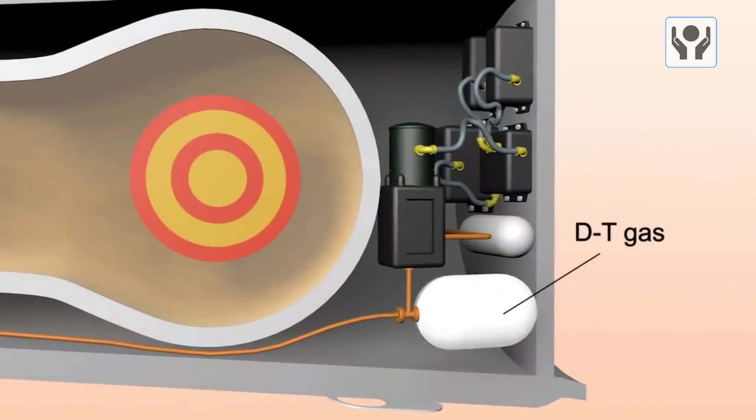The warhead also contains a number of safety features, such as arming and fusing mechanisms that are designed to prevent accidental detonation, as well as mechanisms that are used to prevent unauthorized access to the weapon.